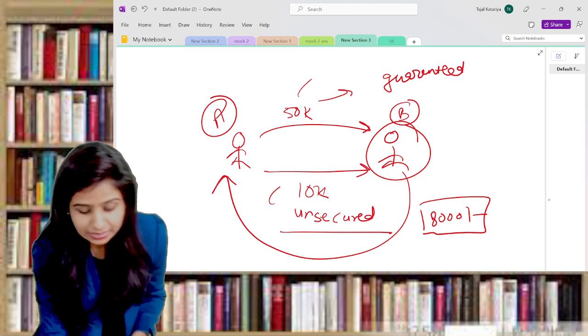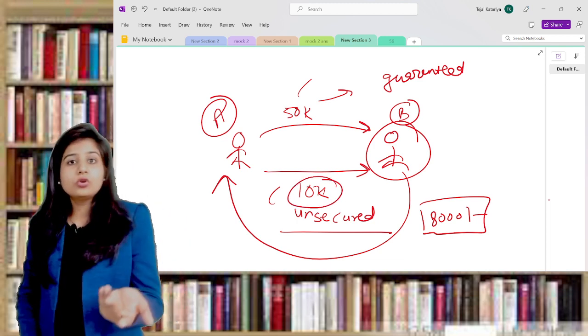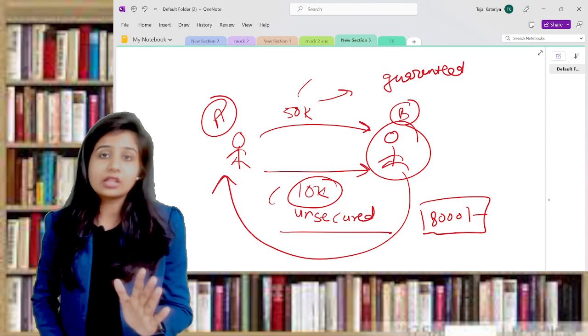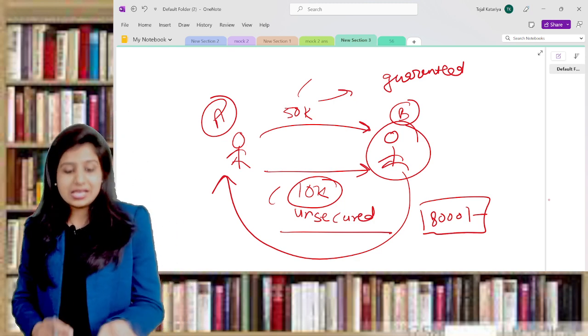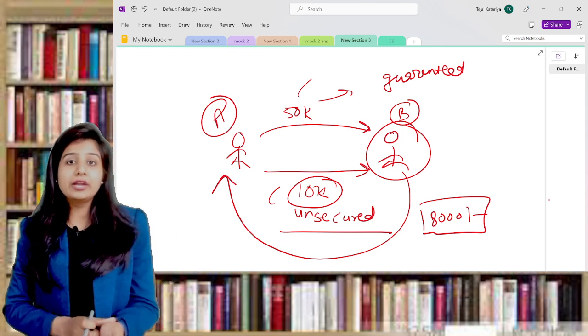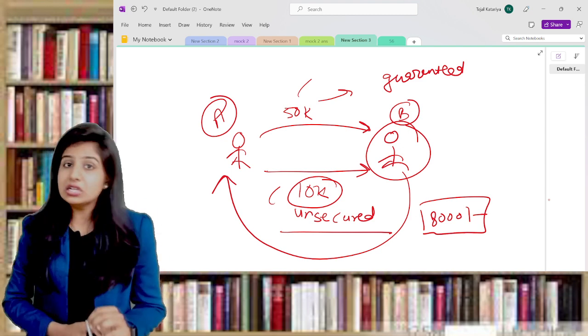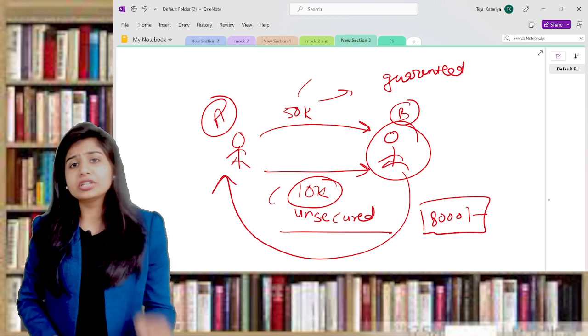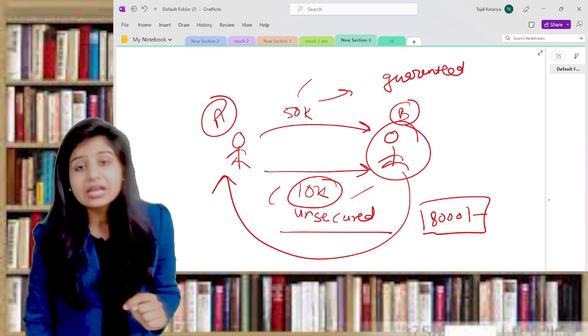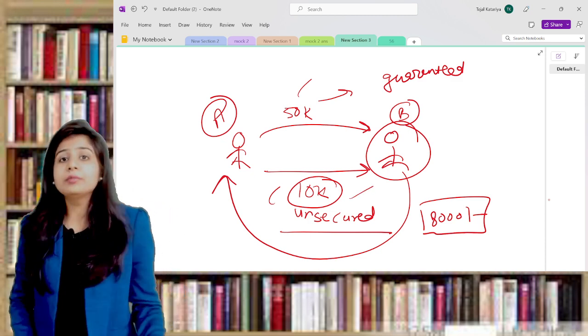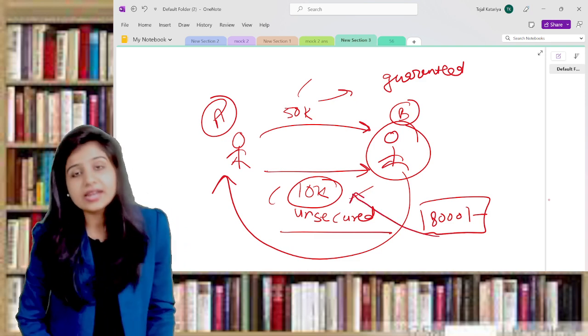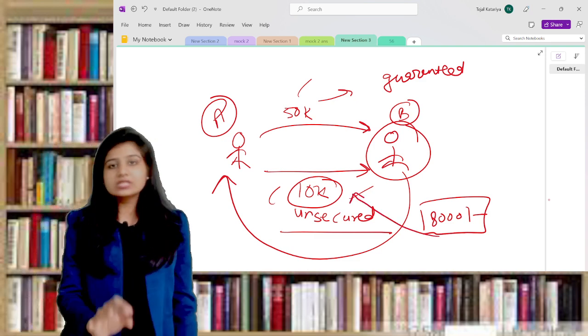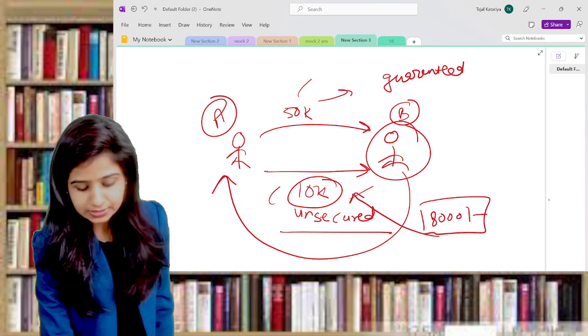Second situation, even if these 10,000 is time barred debt - I hope you understand time barred debt is when somebody has given you the loan and you have not paid that loan for consecutively three years then it becomes time barred. So even though, irrespective of whether this 10,000 is time barred or not, it doesn't matter, we can appropriate these 8,000 against the 10,000. This is section number 60, appropriation by creditor.